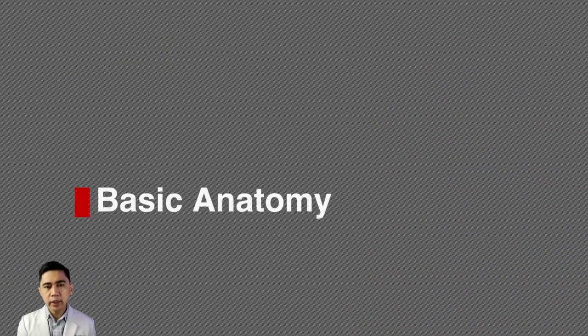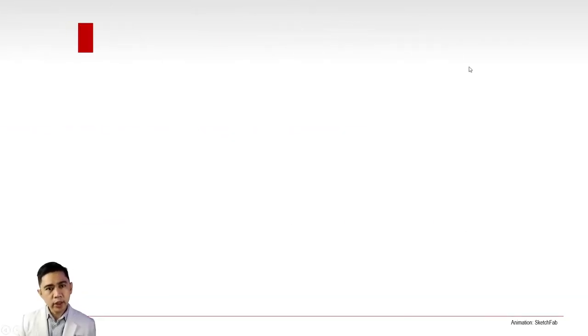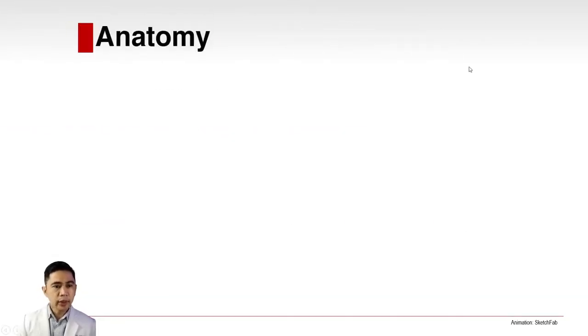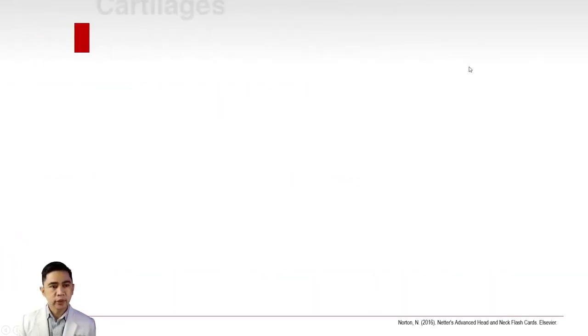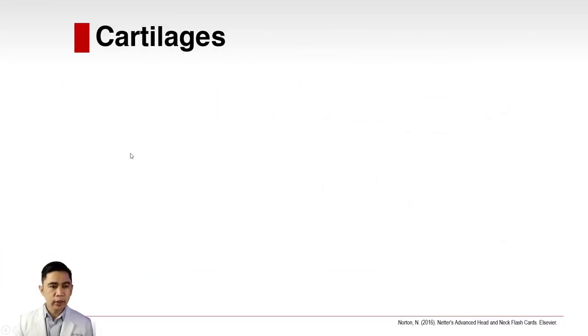We will briefly review the basic anatomy of the laryngeal complex. Laryngeal anatomy will be discussed according to cartilages, laryngeal cavity, and muscles. First, we're going to talk about cartilages.